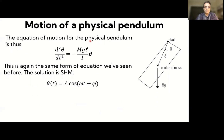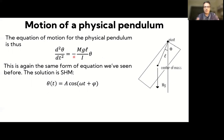This equation has the same mathematical form as the equations we've seen for the mass-spring system and the simple pendulum. It is a second-order derivative of theta with respect to time, with a minus sign because it is a restoring force, and it is linear in theta — a constant times theta.